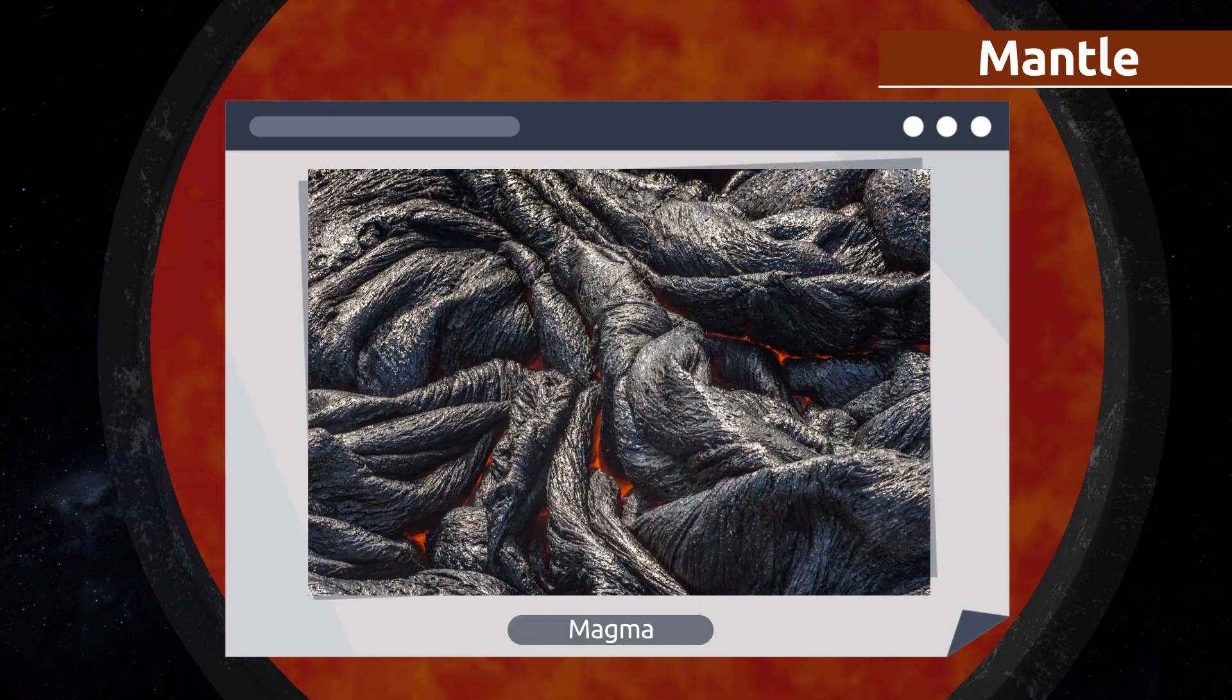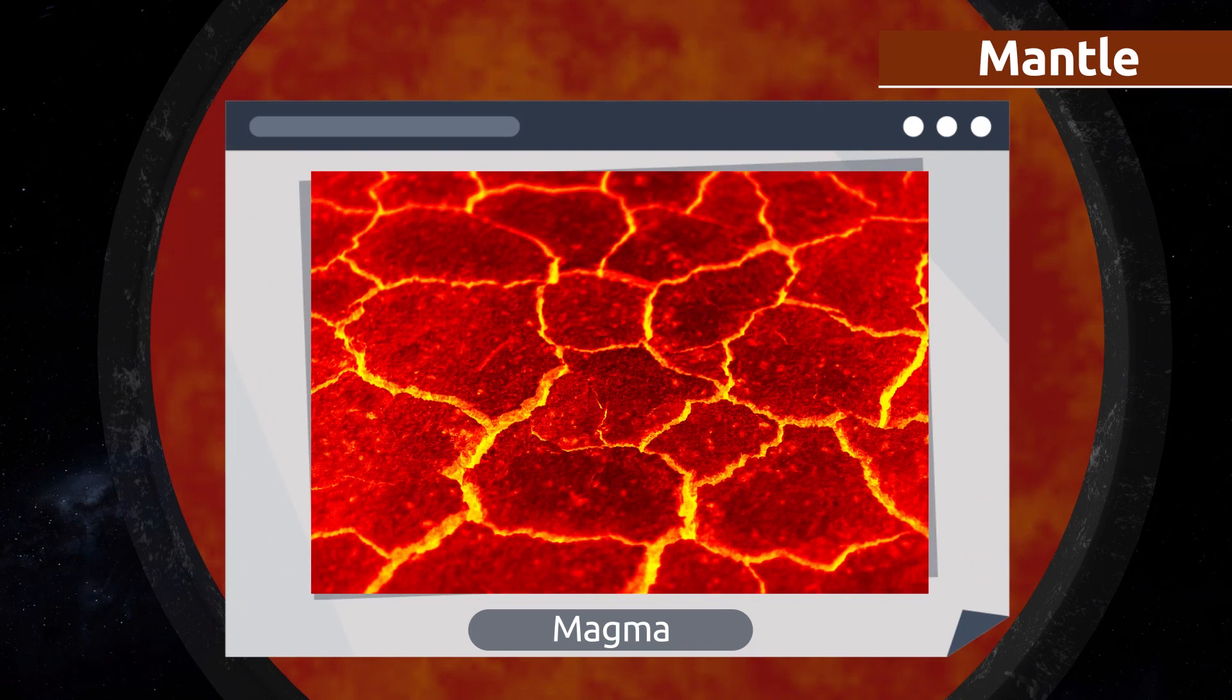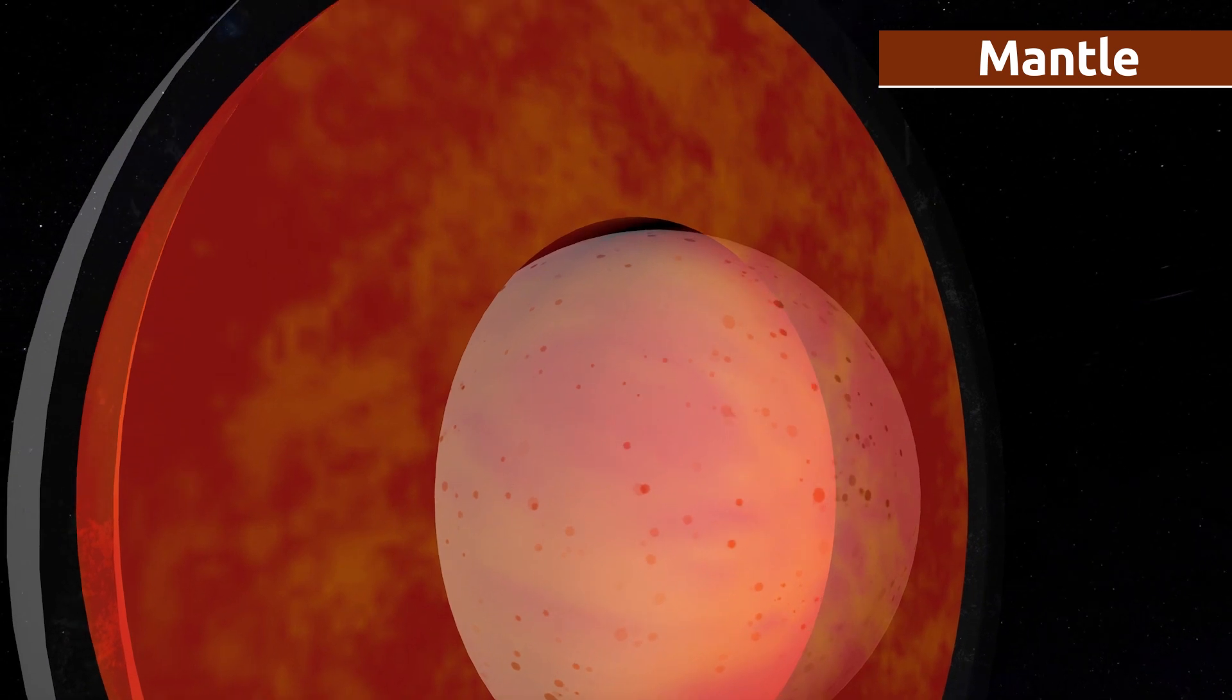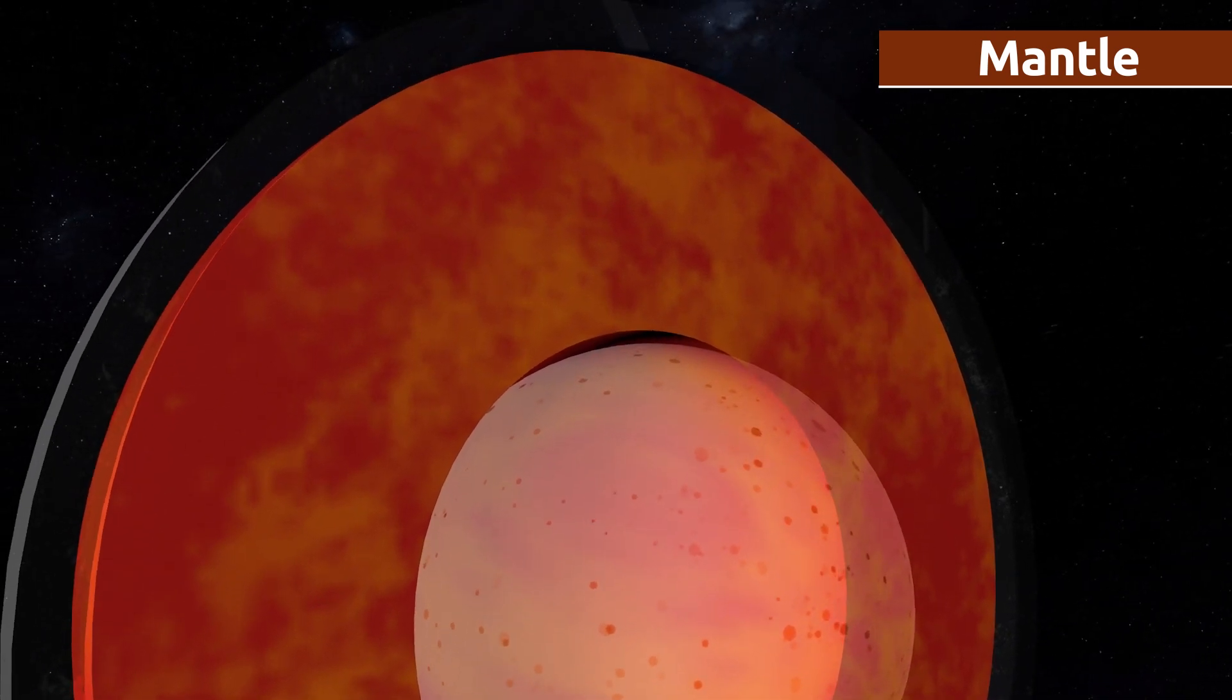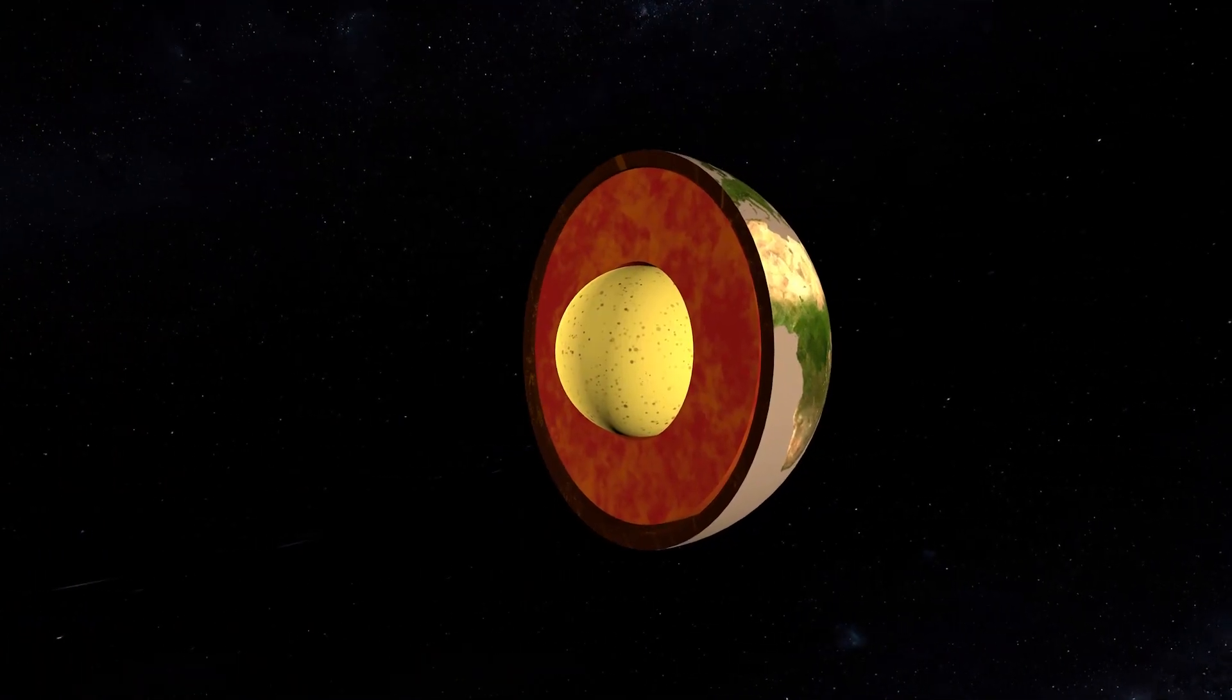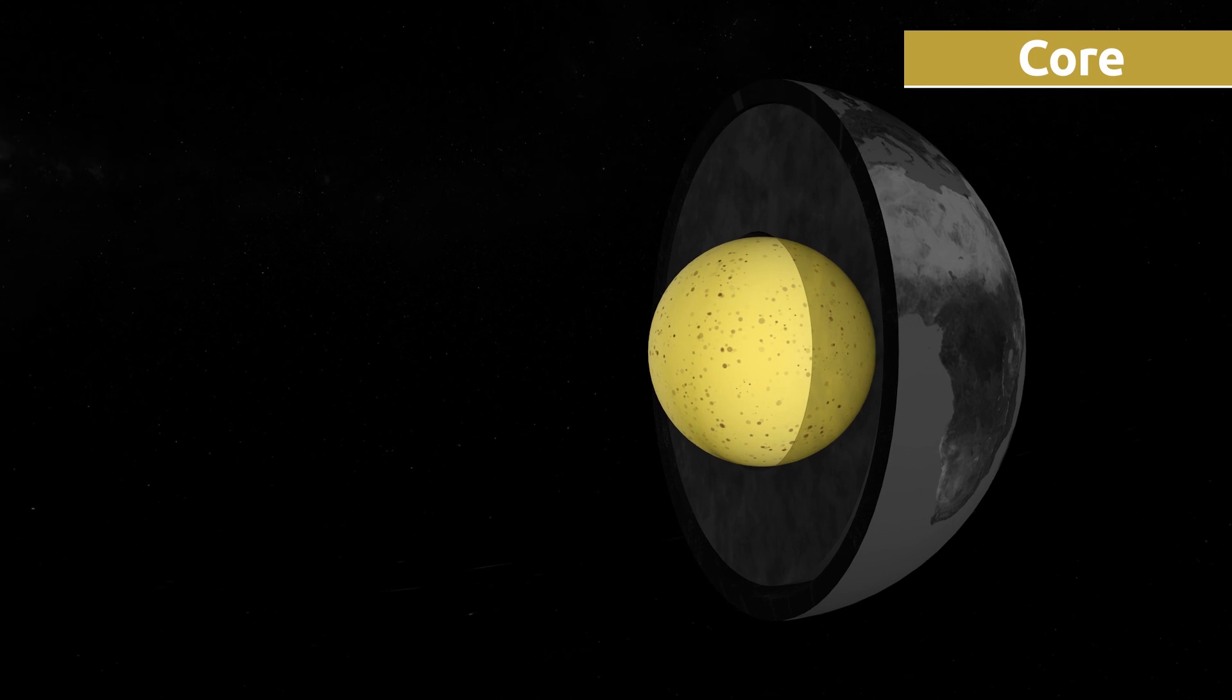Sometimes magma finds its way up to the surface and flows up through the voids between the tectonic plates. This is when volcanoes erupt. The core is the innermost layer of the Earth and it is 3,500 kilometers thick.